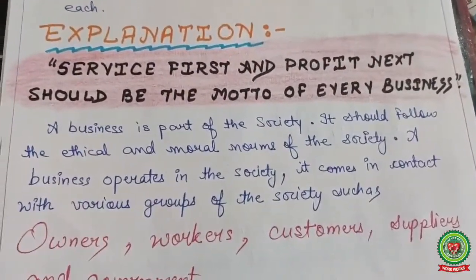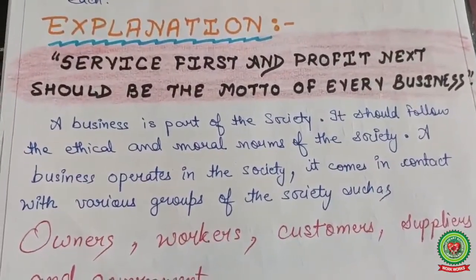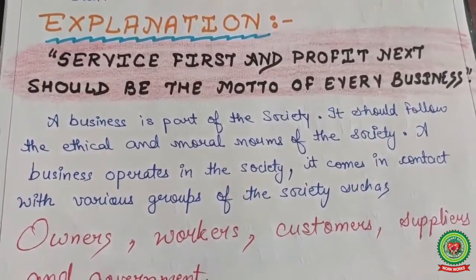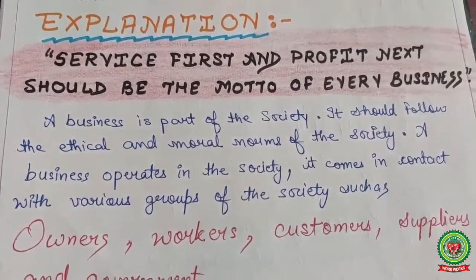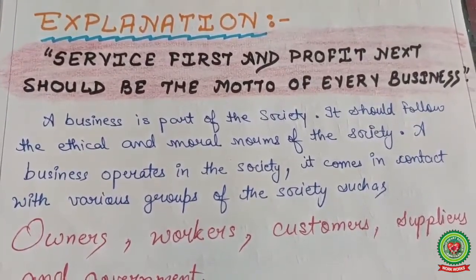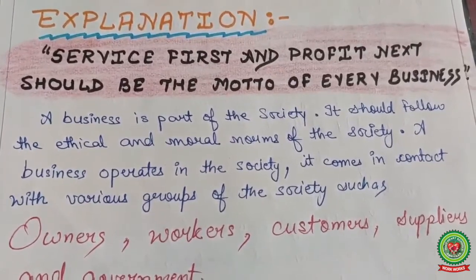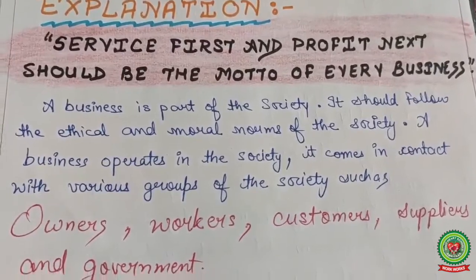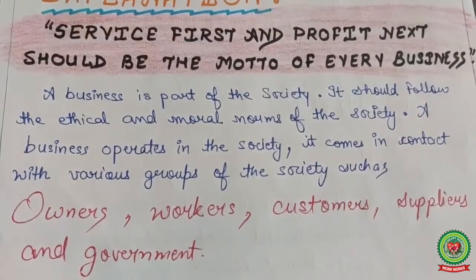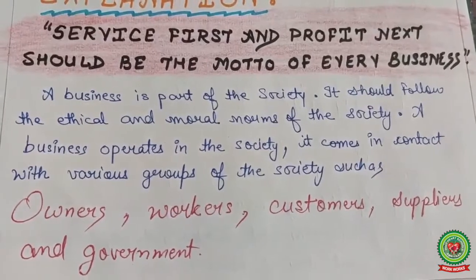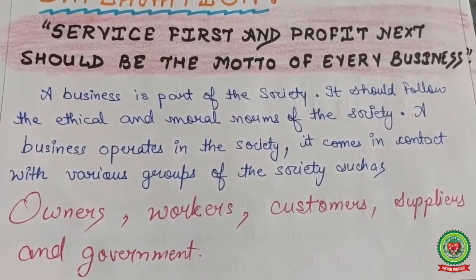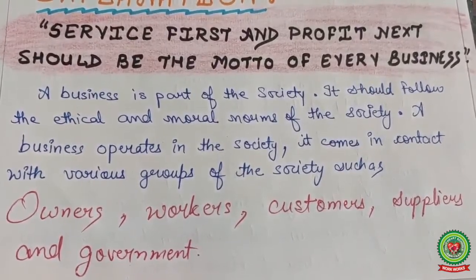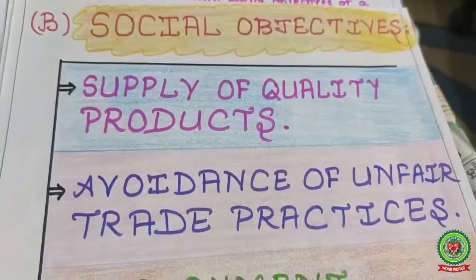Now the social objectives explanation. 'Service first and profit next' should be the motto of every business. In modern business, serve first, then earn profits. A business is a part of society and should follow the ethical and moral norms of society. A business operates in society and comes in contact with various groups: owners, workers, customers, suppliers, and government.